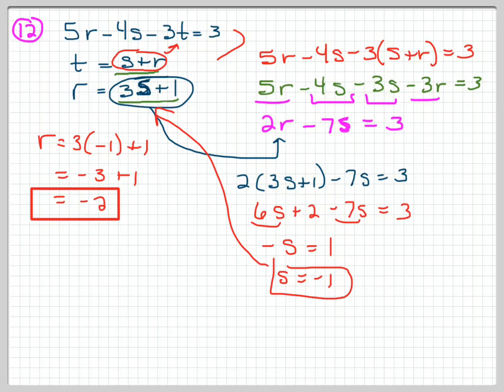And then lastly, I can figure out what t is because, this is r by the way, I've got this equation that says t equals s plus r. So s is negative 1 plus r which is negative 2, looks like t is negative 3. Okay, so that's solving it by substitution, probably the most efficient way to do it.